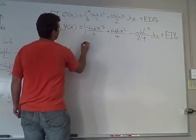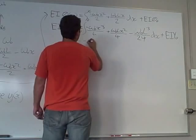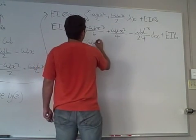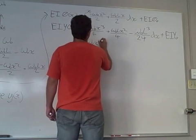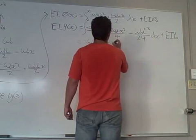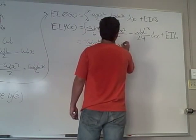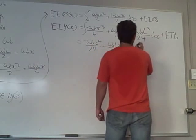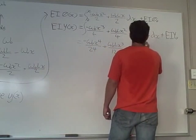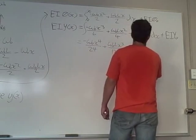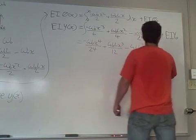And so we go through and we integrate negative WOL X to the fourth over 24 plus WOL X to the third over 12 minus WOL to the third X over 24 plus WOL X to the third.